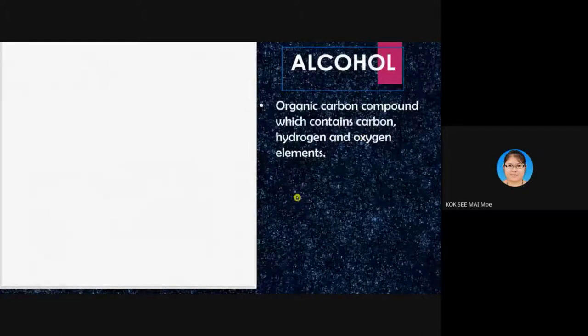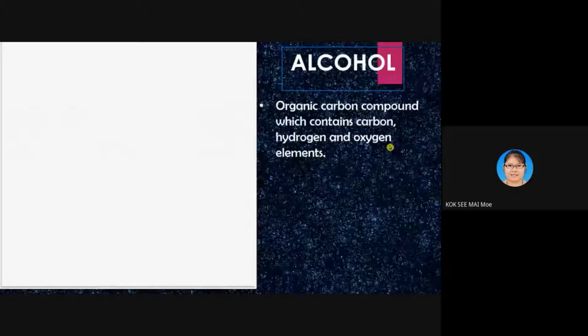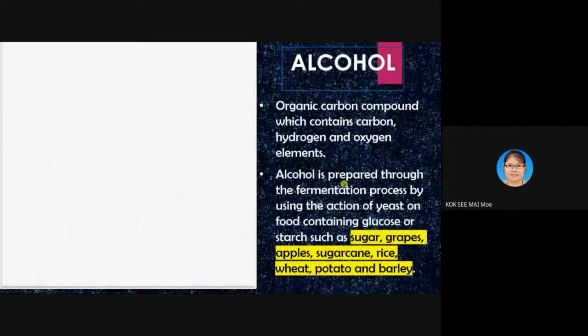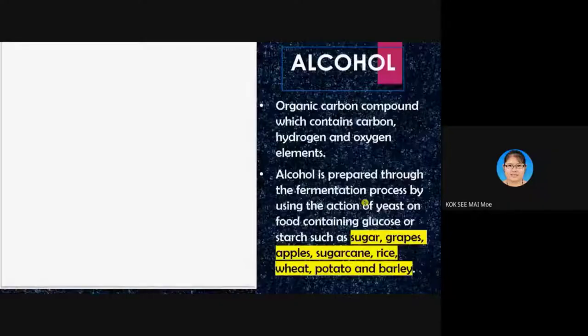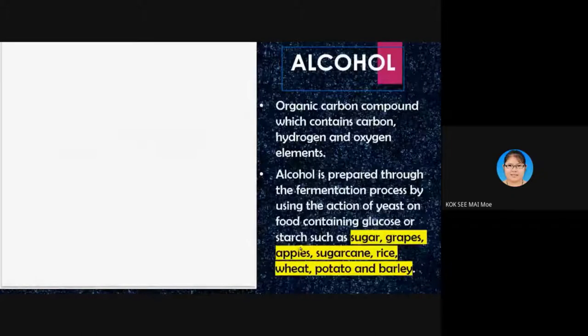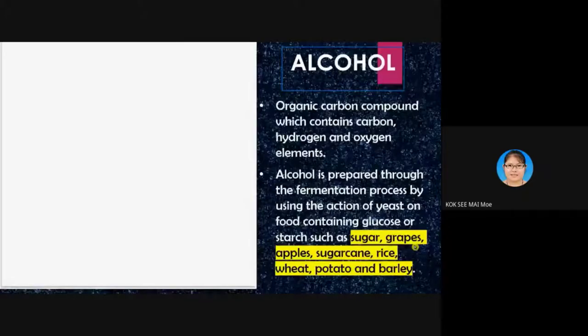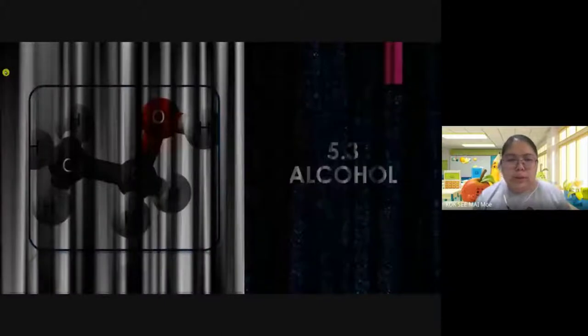These three elements combine together. Alcohol is prepared through the fermentation process, by using the action of yeast on food containing glucose or starch, such as sugar, grapes, apples, rice, wheat, and potato. All of these can produce glucose and therefore can build alcohol.